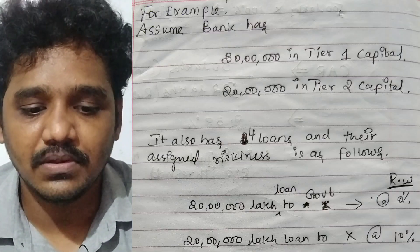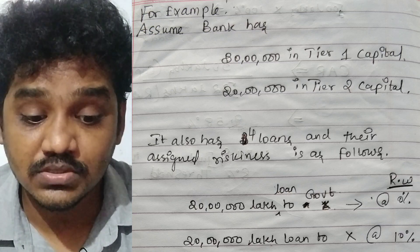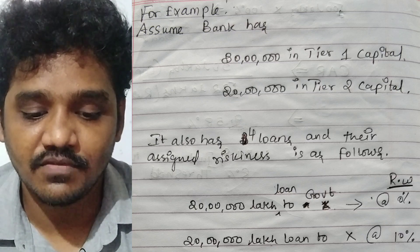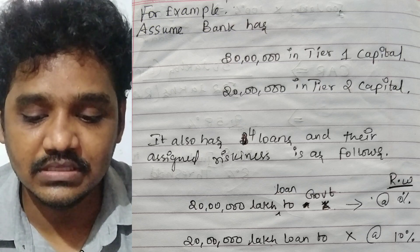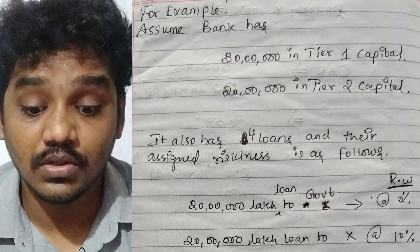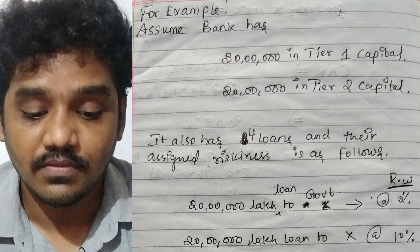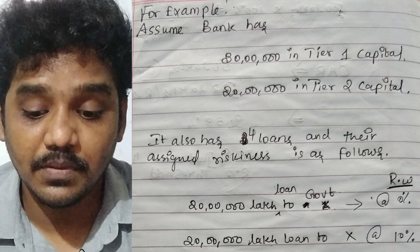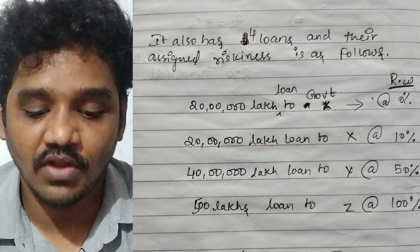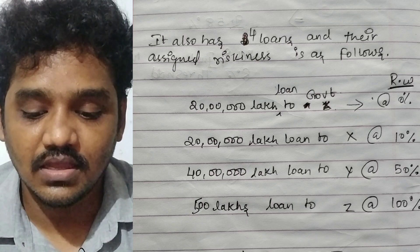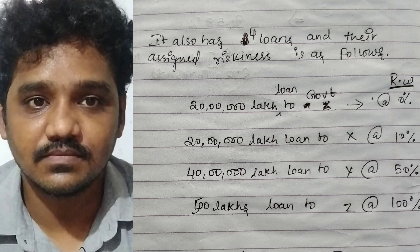Let's take an example. Assume bank XYZ has Tier 1 capital of 30 lakhs and 20 lakhs of Tier 2 capital. It also has 4 loans with assigned risk weightings as follows: Loan 1 — 20 lakhs given to government at 0% risk; Loan 2 — 20 lakhs given to Mr. X at 10% risk; Loan 3 — 40 lakhs to company Y at 50% risk; and Loan 4 — 500 lakhs to EZ at 100% risk.